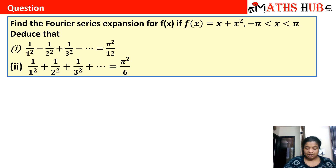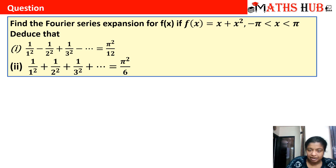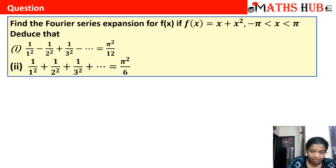Let us see how to go about this question. The interval is from minus pi to pi, so whenever the interval is from minus l to l we need to check whether the given function is even or odd. In this case, neither the function is even nor odd — it is a combination of an odd and an even function, so we cannot completely declare whether it is even or odd, but we can use the properties.